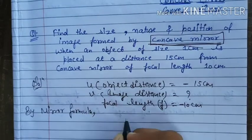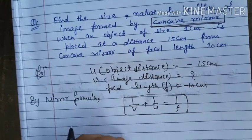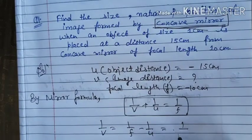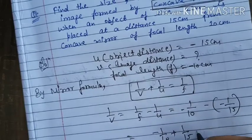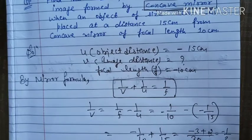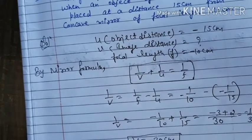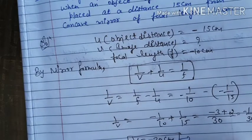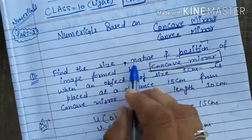Using the mirror formula: 1/v + 1/u = 1/f. So 1/v = 1/f − 1/u = −1/10 − (−1/15) = −1/10 + 1/15. Taking LCM as 30, this gives −3 + 2 = −1 over 30, so 1/v = −1/30.